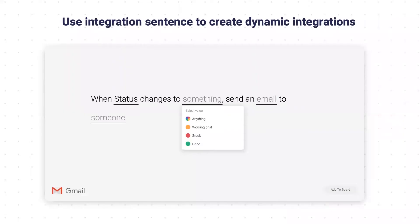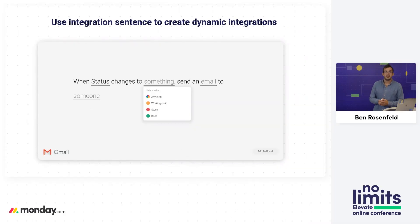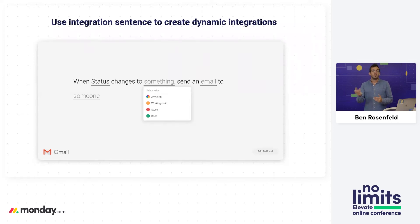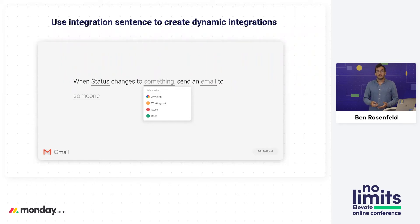Another good example of creating one app feature that can be used in multiple workflows is the Gmail integration — specifically the recipe: when a status changes to something, send an email to someone. We created one recipe, but people can use it on multiple boards with multiple statuses as triggers. You can also configure the email so each account can have their own tailor-made email with the information they need.